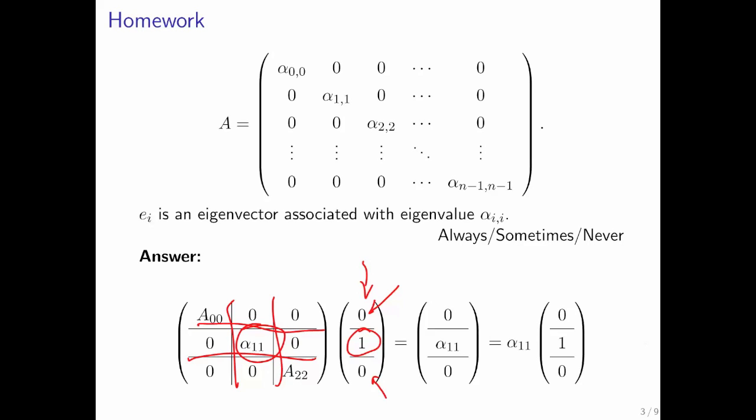If you then do a partitioned matrix vector multiplication, which is something that you learned in week 3, then you end up doing this times that plus this times that, etc.